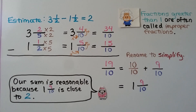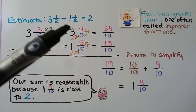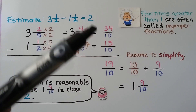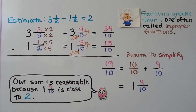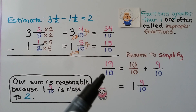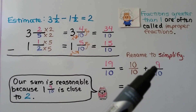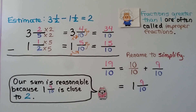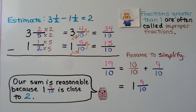Fractions greater than 1 are often called improper fractions. We multiply the whole number times the denominator and add the numerator. 3 times 10 is 30, plus 4 is 34 — we use that denominator. 1 times 10 is 10, plus 5 more is 15. We have 15 tenths. Now we have 34 tenths minus 15 tenths, and 34 minus 15 is 19 — we have 19 tenths. We can pull out 10 tenths and have 9 tenths left over: 19 tenths equals 10 tenths plus 9 tenths, which means it's equal to 1 whole and 9 tenths. Our answer is reasonable because 1 and 9 tenths is close to our estimate of 2.